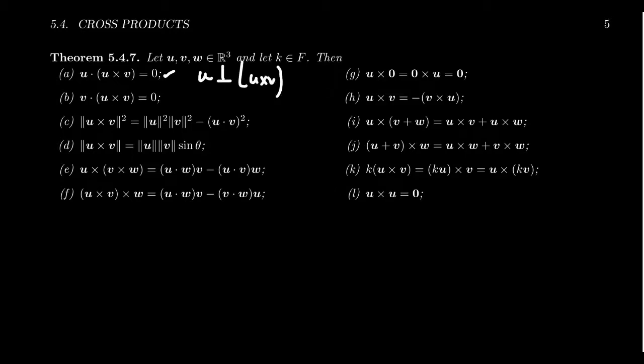And it's also true here. If you take V dot U cross V, you're going to get zero as well. And so the cross product is orthogonal to the original vectors.